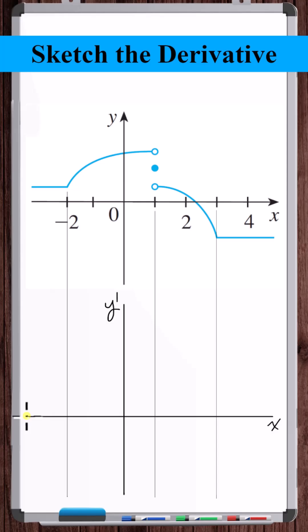Approaching x is equal to minus 2 from the left, we see that the slope is 0. The derivative doesn't exist at x is equal to minus 2. Crossing over x is equal to minus 2, the slope jumps from 0 to a positive slope.